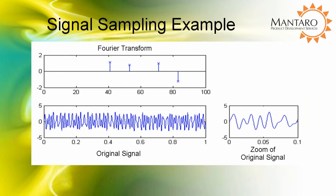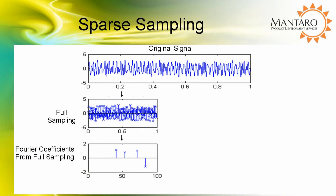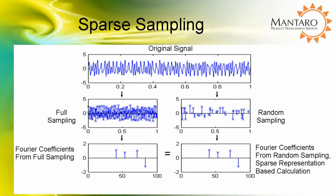Another way to understand how sparse representation works is to take the example of an audio signal and its frequency spectrum as shown by the Fourier transform. The same signal can be represented as a Nyquist sample signal in the traditional way, from which identical Fourier coefficients can be computed. More interestingly, we can compute the same Fourier coefficients from a small or random sample of the signal with sparse representation based signal processing.